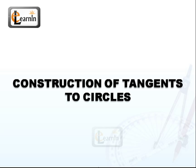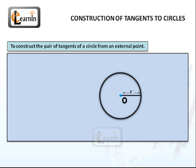Construction of Tangents to Circles. Construction: To construct the pair of tangents of a circle from an external point.